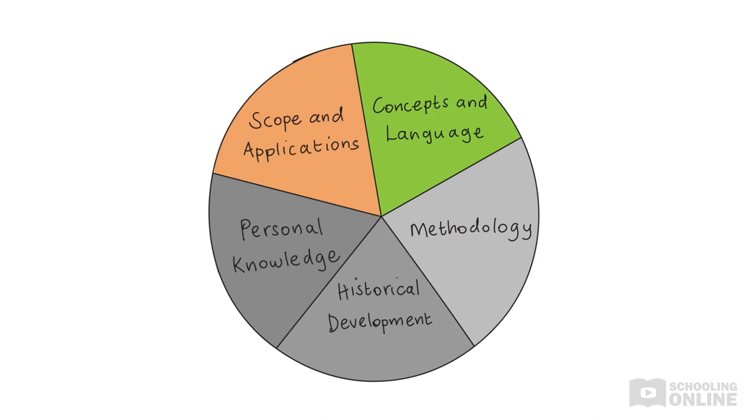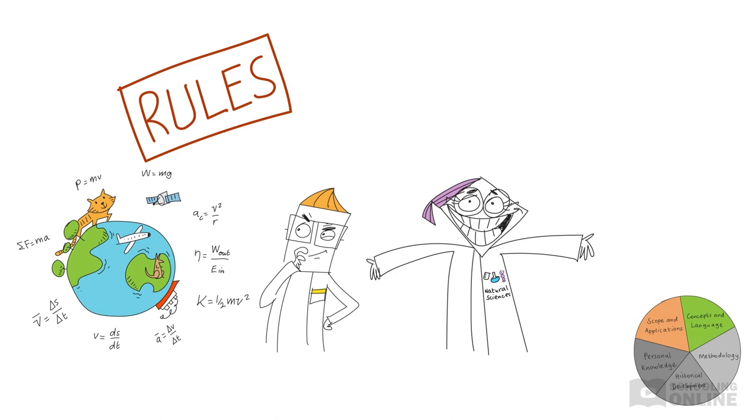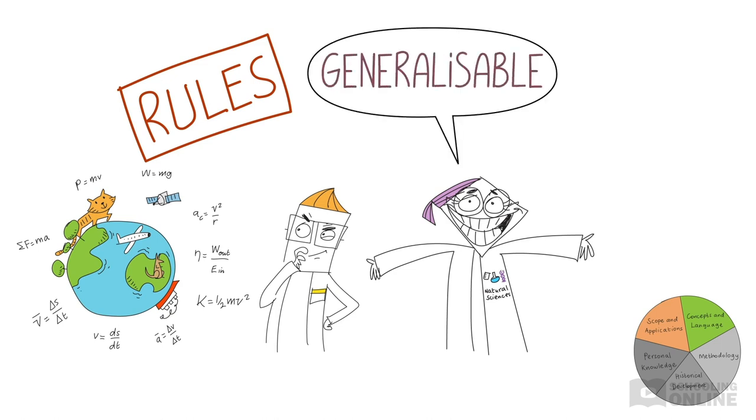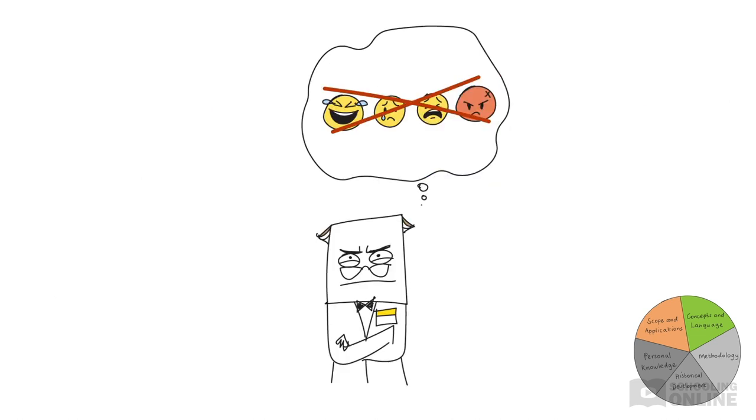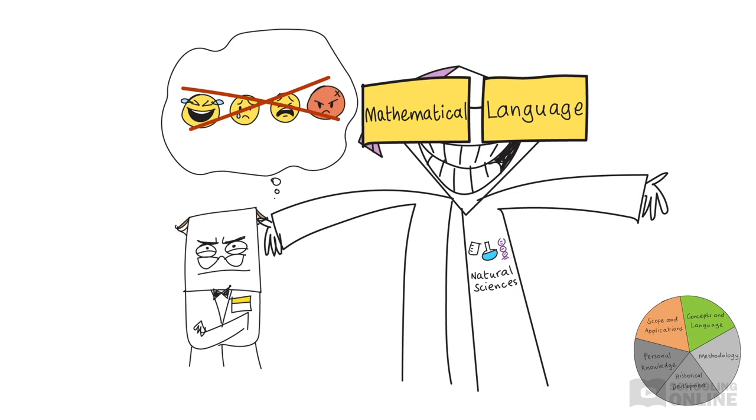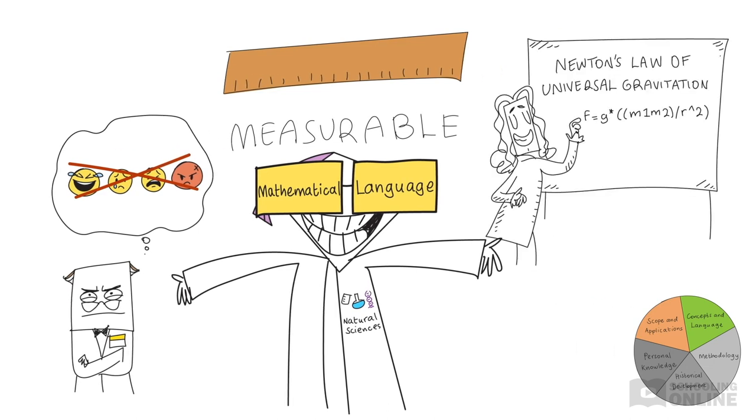What are the key concepts and language of the natural sciences? In other words, how can we describe the rules of the natural world? Since principles, laws, and theories need to be generalizable—that is, applicable to a broad range of situations—natural scientists need precise language that clearly and accurately communicates the rules of the natural world. To achieve this, scientific language tries to avoid any emotion or bias. This is why mathematical language is fundamental in the natural sciences. It deals with precise, measurable quantities. You'll often find scientific laws, like Newton's law of universal gravitation, expressed in mathematical notation.